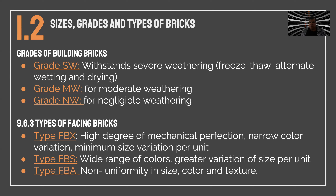The face finish of the brick depends on the type of building and the desires of the person building. For a corporate building where you want to show perfection and no variation, you can use type FBX — facing brick extra — which has very little variation and very similar sizes. FBS is where you have more color and greater variation of size per unit. FBA is not uniform and can be used for constructions that benefit from a varied texture. These kinds of bricks are usually cheaper.